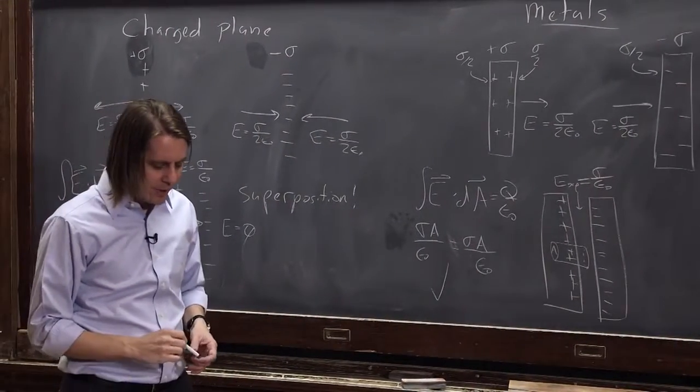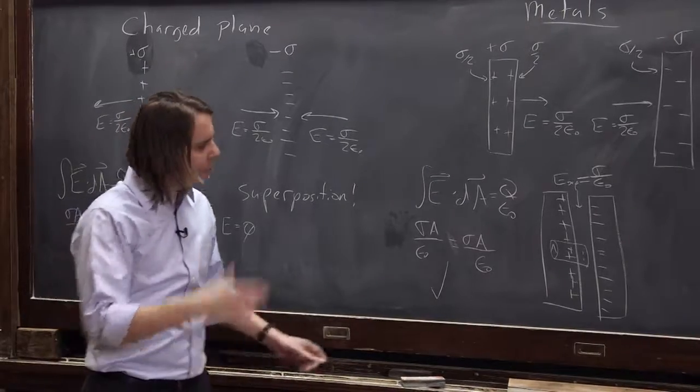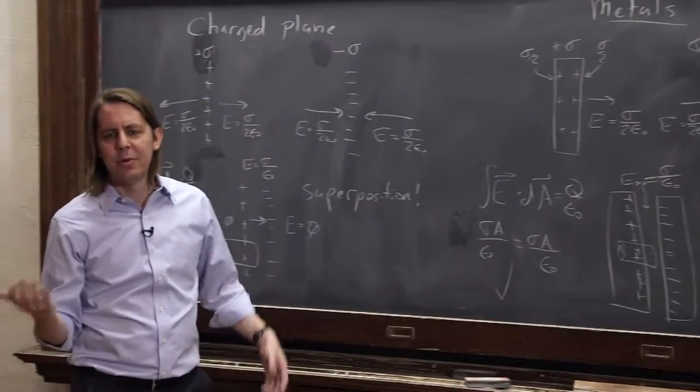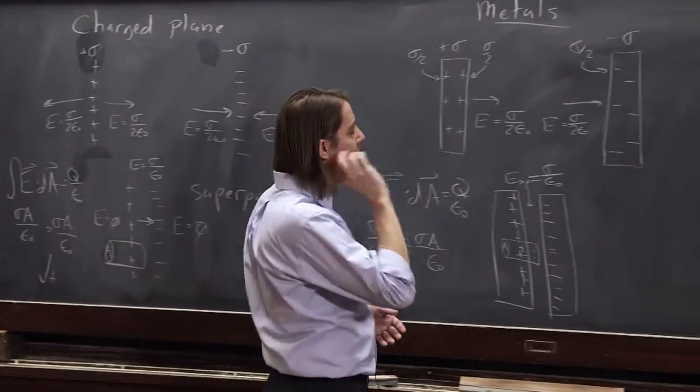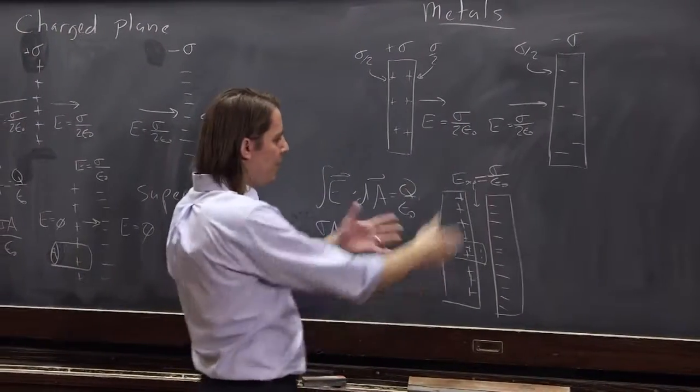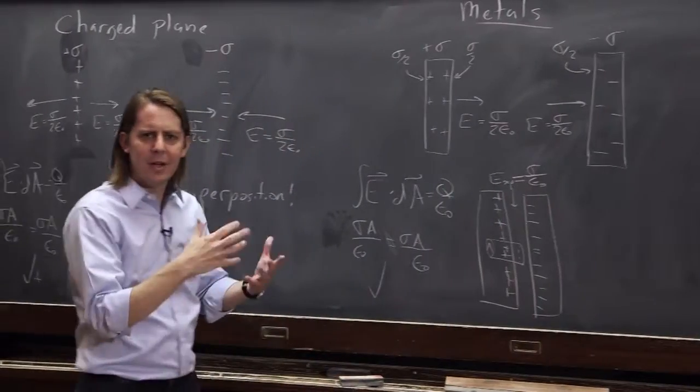Things seem all right. You could also look at it and say, well, this can't be right because we learned that the field at the surface of a metal has to be sigma over two epsilon naught. We learned that the charge has to redistribute and it has to be uniform.